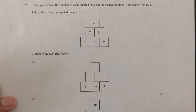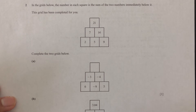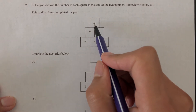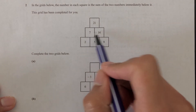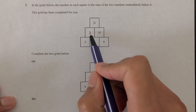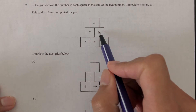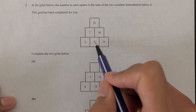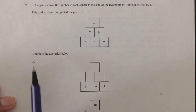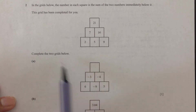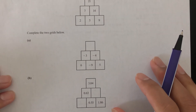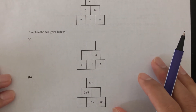Question number 2: in the grids below, the number in each square is the sum of the numbers immediately below it. As you can see, 21 is the sum of 7 plus 14, 7 is the sum of 2 plus 5, and 14 is the sum of 5 plus 9. Now we have to complete the grids below.